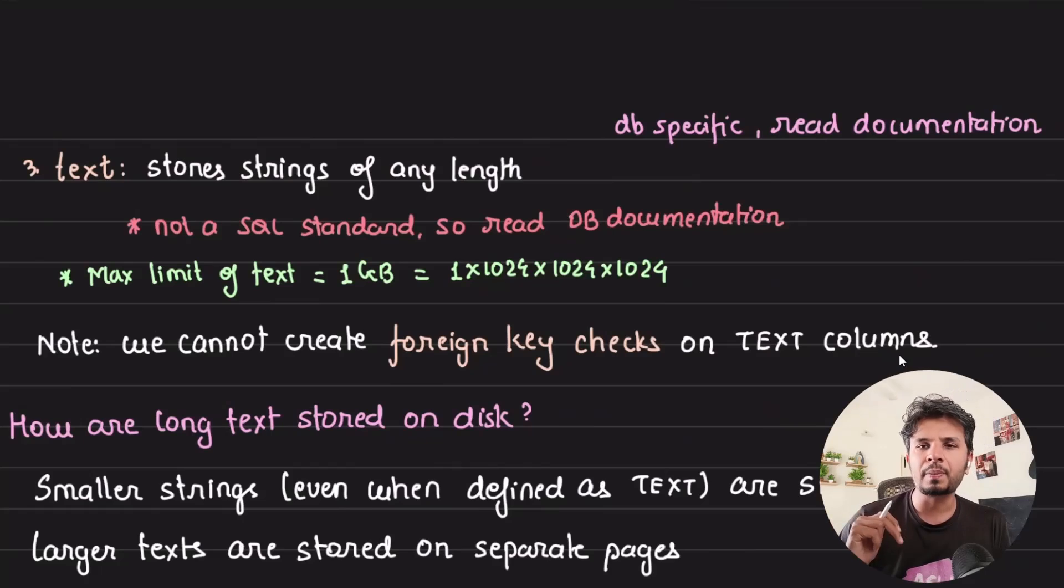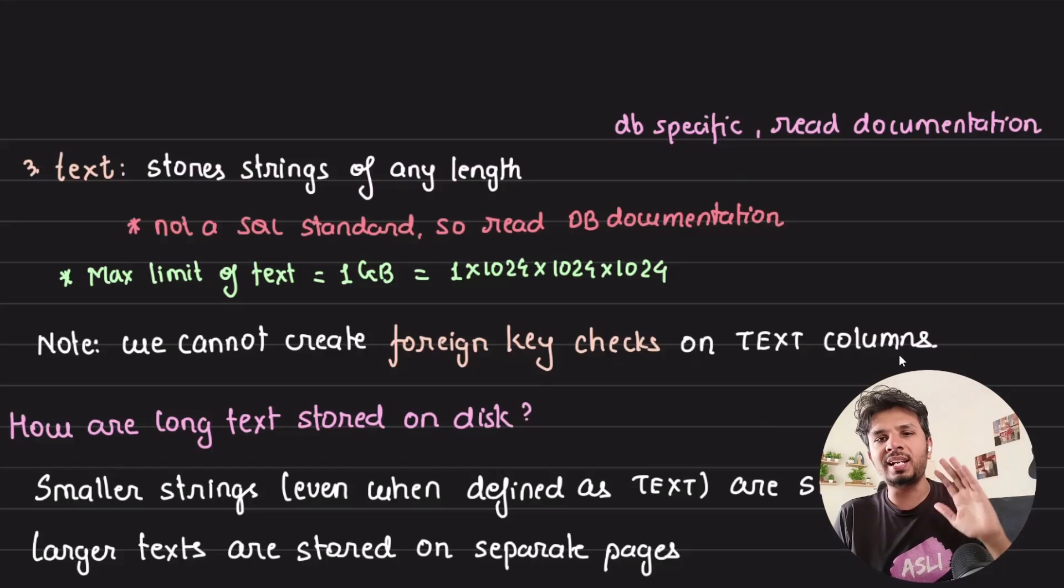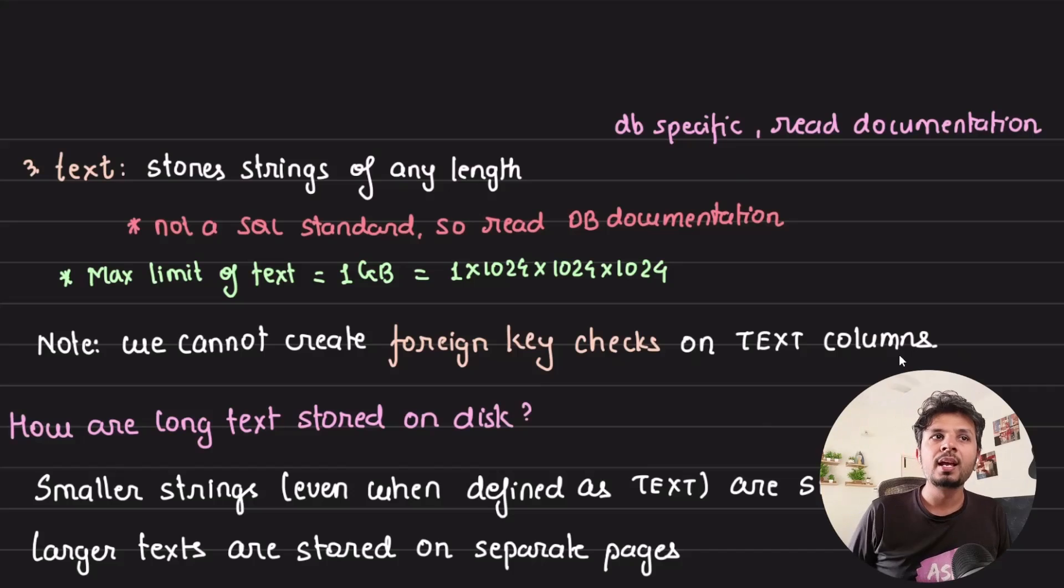Now let's talk about text column. Text column allows us to store strings of any length, again subject to database configuration. The max limit for Postgres is 1GB. The trade-off is if you have a column of type text, you cannot create a foreign key check on that. Your database disallows creating foreign key checks on text columns.